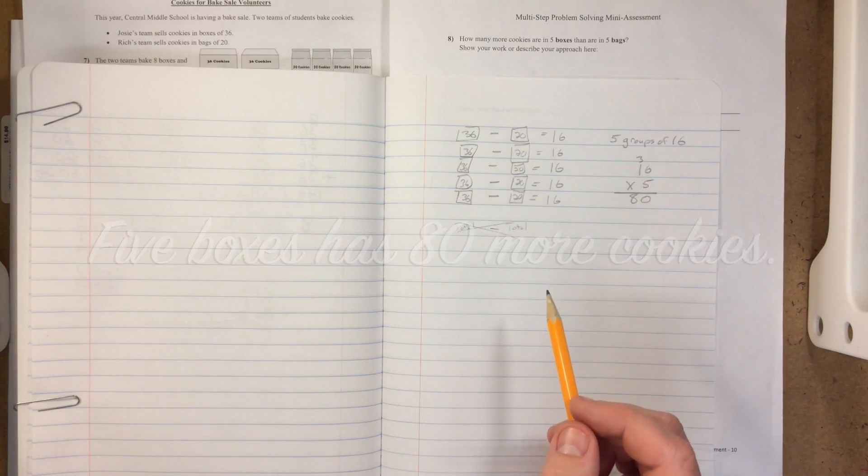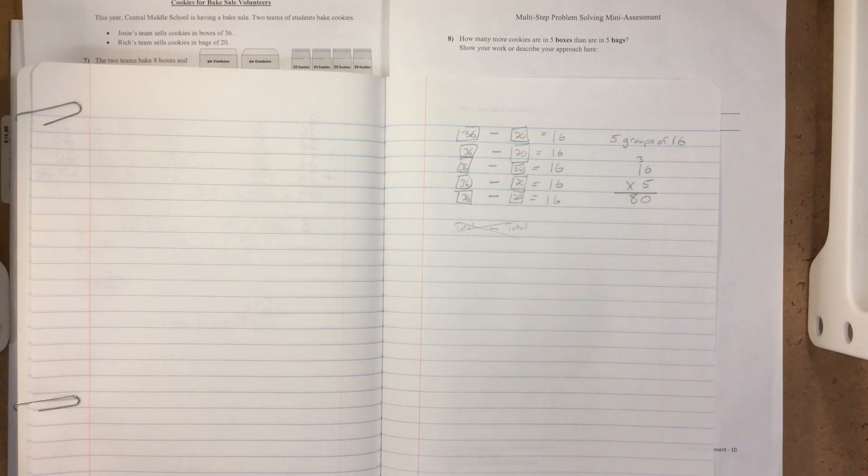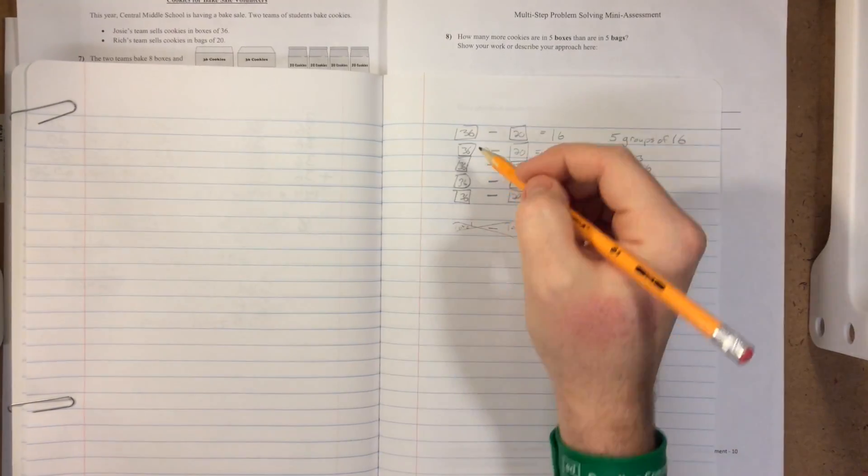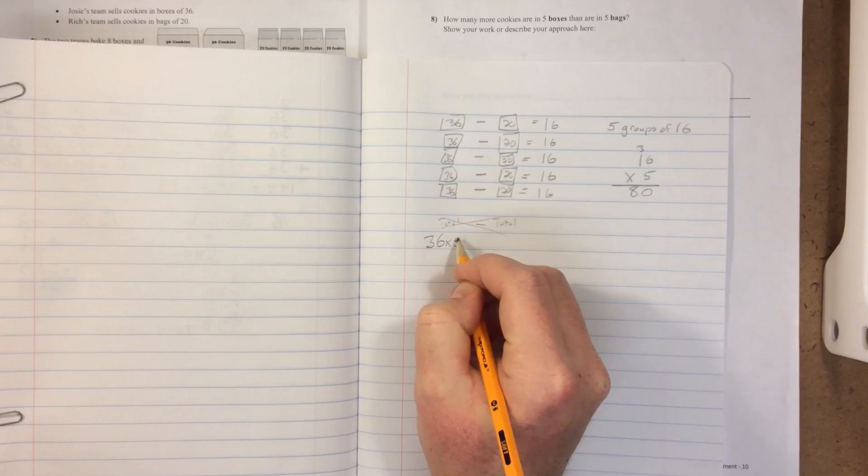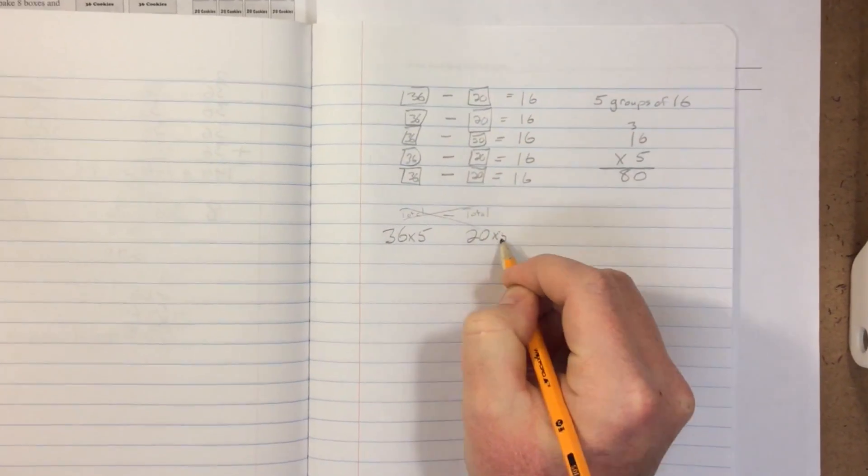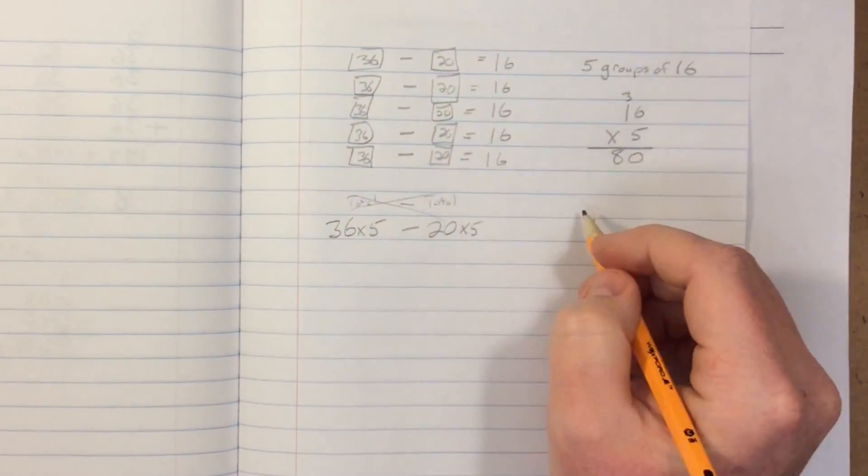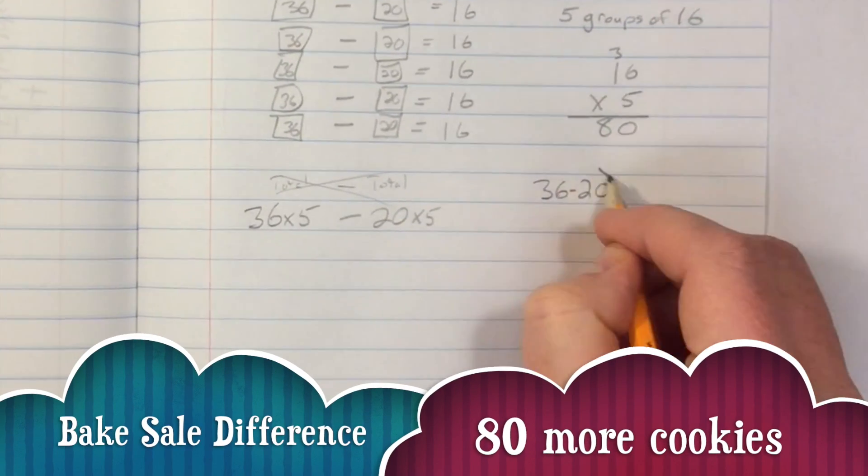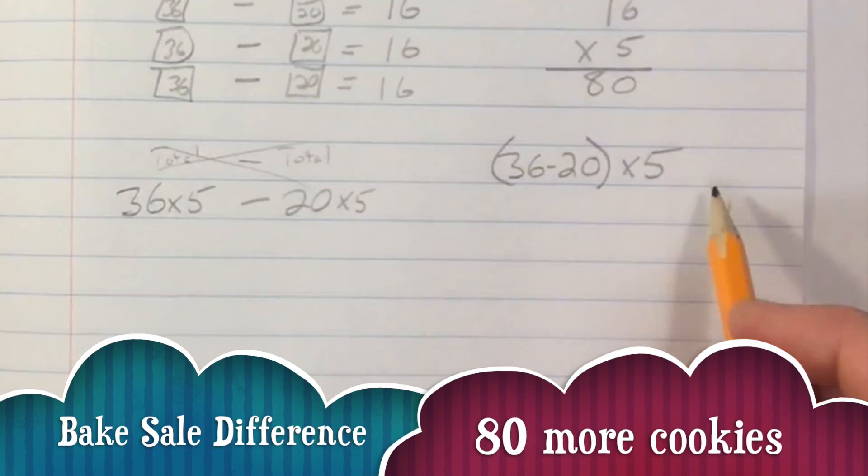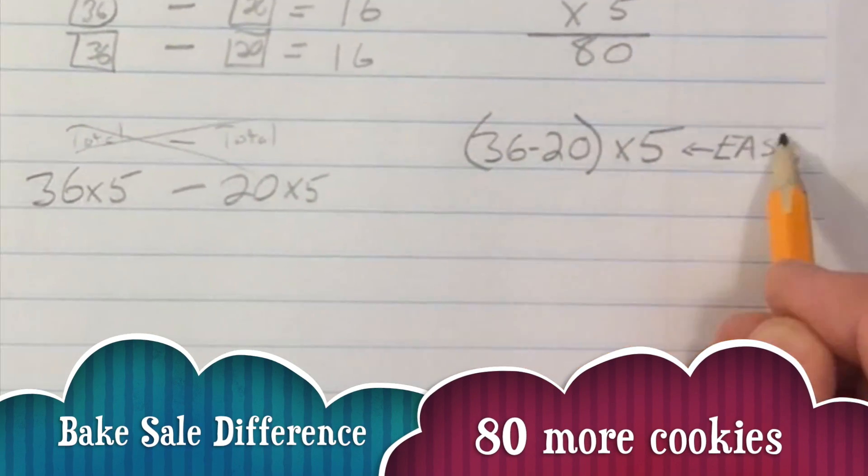We found it more directly. So we could have went the long way, did 36 times 5 and then 20 times 5 and subtract those two. But what we did is we subtracted first, got that difference, and then multiplied by 5. And that gives us 80, and that's much easier.